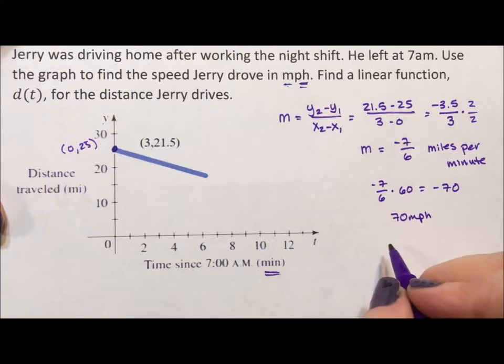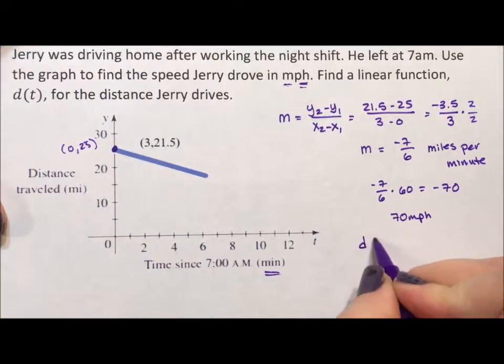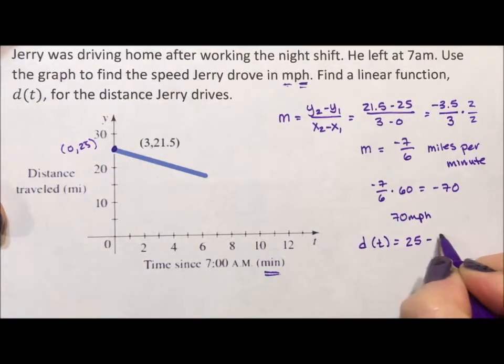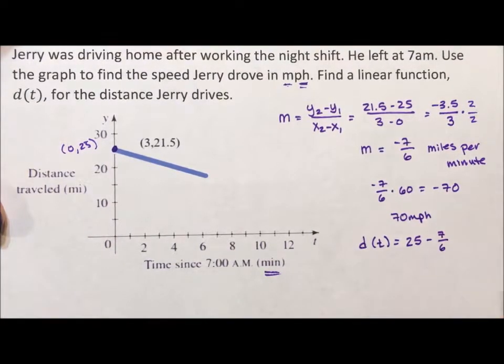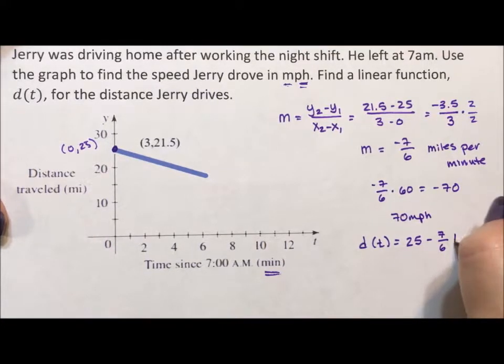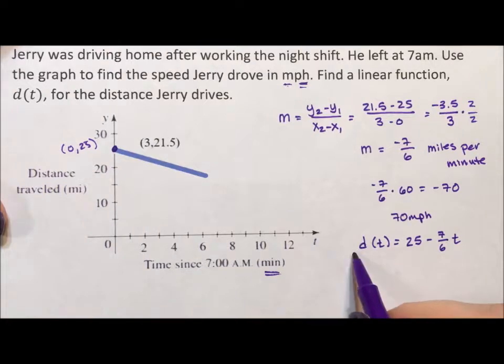The equation D of t distance over time, he's starting 25 miles away and he's taking away seven sixths of that distance, seven sixths of a mile. So 1.16 repeat miles every minute. So here's my equation. Here's the speed.